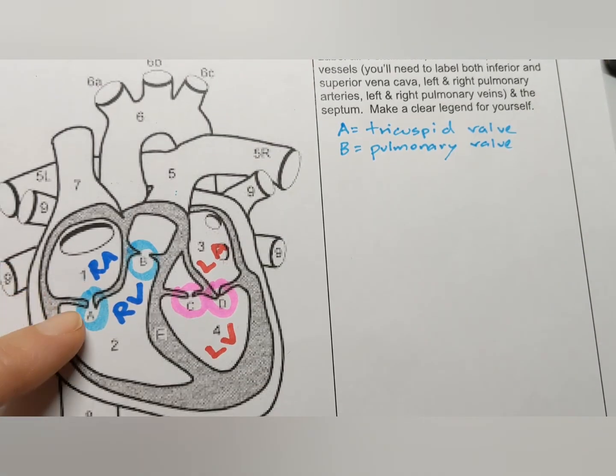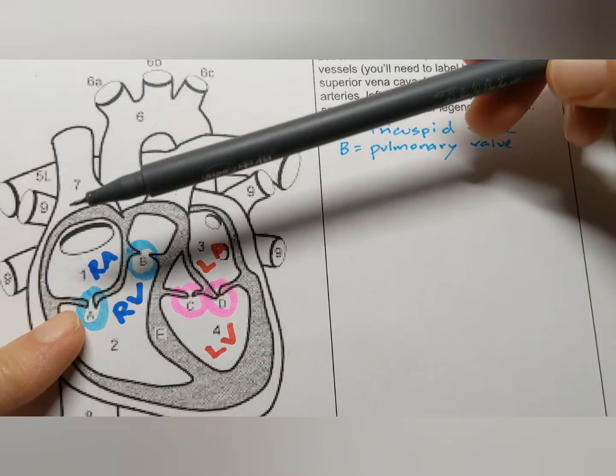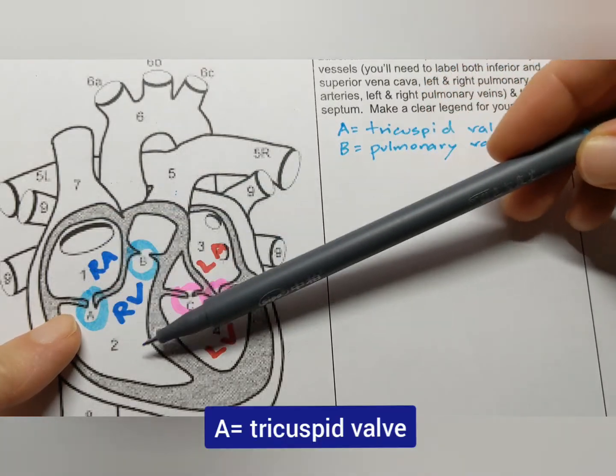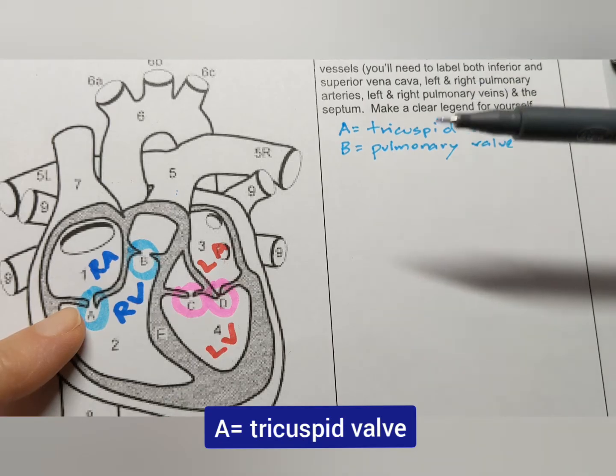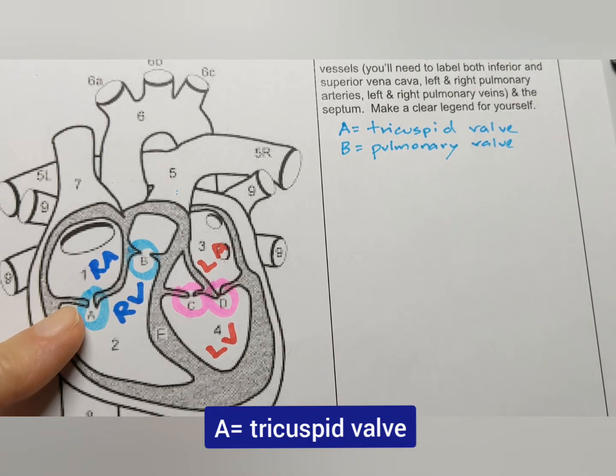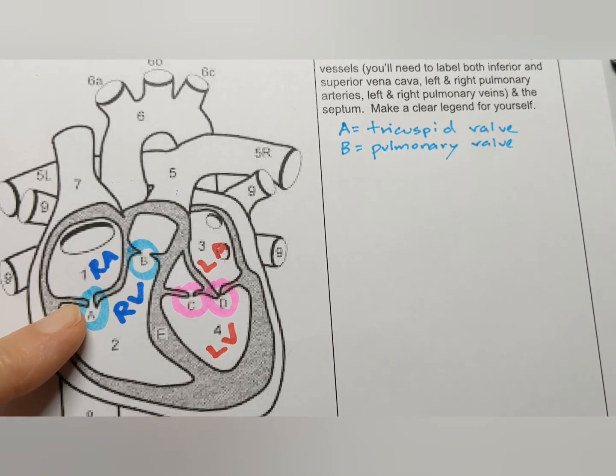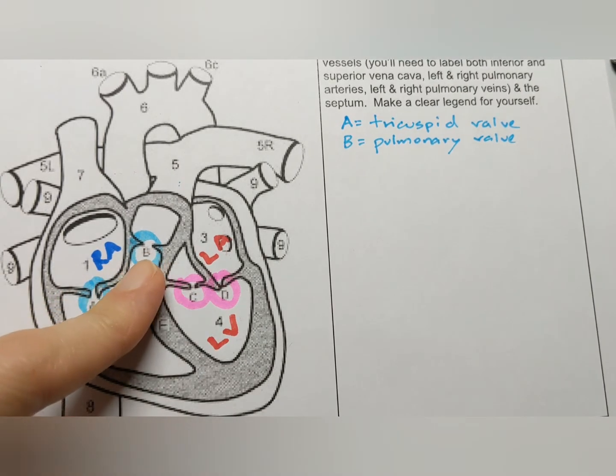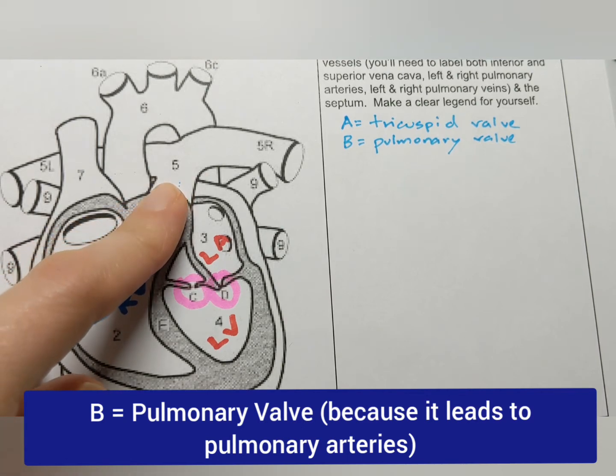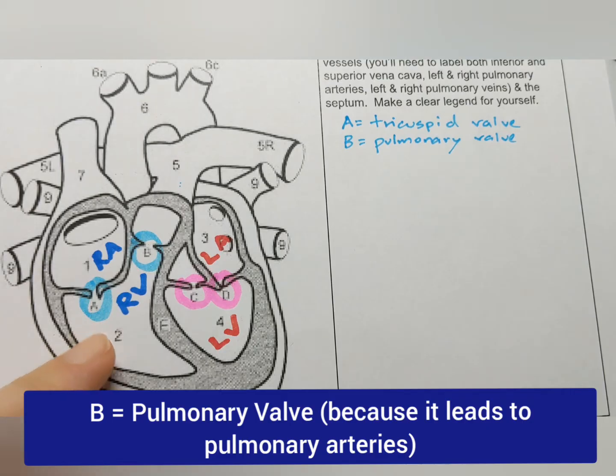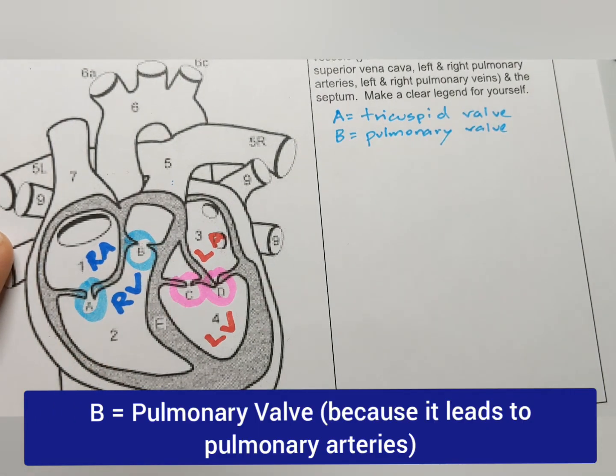So let's start with the valves on the right side of the heart. The blood is going to go from the right atrium to the right ventricle through something called the tricuspid valve. Make sure you say these words so that you can really get familiar with them. So again, A is the tricuspid valve. Then we have B, which is the pulmonary valve, and you might have realized that the pulmonary valve leads to the pulmonary arteries. That word pulmonary comes up a lot and in a later lesson we'll talk about why.